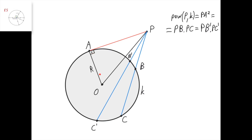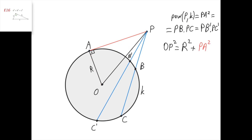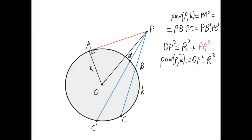Let the radius of the circle be R. Since PA is tangent to the circle and O is its center, the angle OAP is 90 degrees. Applying the Pythagorean theorem to triangle OPA, the hypotenuse OP squared equals R squared plus PA squared. Since PA squared is the power of P with respect to K, we get that the power of P with respect to K is OP squared minus R squared — that is, the distance between the point and the center squared, minus the radius R squared.